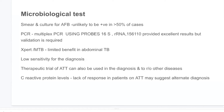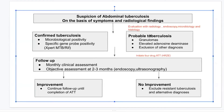In the evaluation algorithm for abdominal tuberculosis, when suspicion arises on the basis of symptoms and radiological findings, it requires detailed evaluation with radiology, endoscopy, microbiology, and histology. Confirmed tuberculosis means microbiological positivity or specific gene probe positivity for MTB — in that case, proceed straight to the treatment regimen. Follow-up involves monthly clinical assessment with objective and subjective assessment at 2 to 3 months: endoscopy for intestinal tuberculosis or ultrasonography for patients with abdominal ascites.